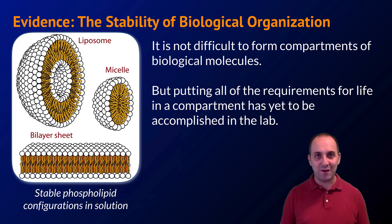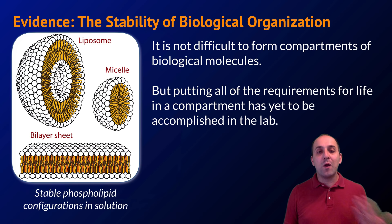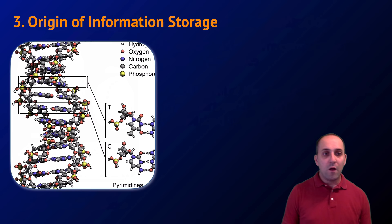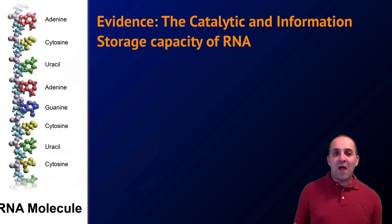No one has yet put all the requirements for life into one compartment in a laboratory setting — that has not been accomplished and may never be. Given the time horizons necessary, it could have taken a hundred million, two hundred million, or half a billion years for this to happen — and that's no problem in early Earth's history. It may simply be unrealistic to expect anyone to spontaneously create life in a lab.